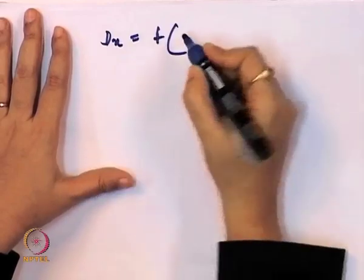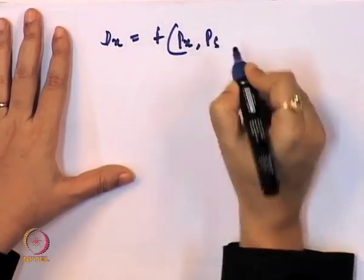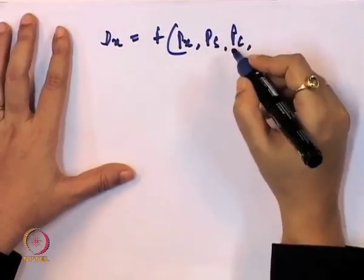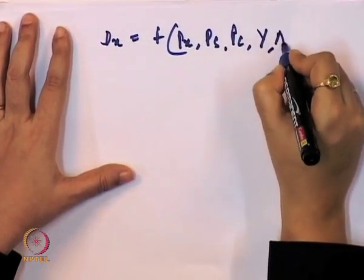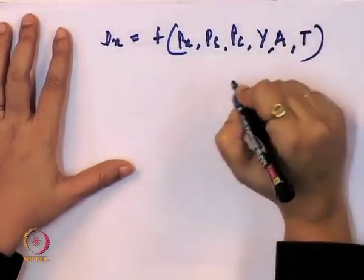Let us take a case of a demand function, because in a demand function the primary variable affecting demand is price, but there are several other variables that affect demand for a product. We assume demand is influenced by: price of x (Px), price of substitute good (Ps), price of complement good (Pc), income (Y), advertising expenditure (A), and taste of the consumer (T).